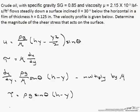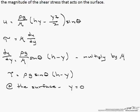So now we have our equation for shear stress. Now we have to find it at the surface. That means y equals 0. So if we have this film of thickness where h is 0.125 inches, at y equals 0 that's where the surface is. So now we put our numbers in.